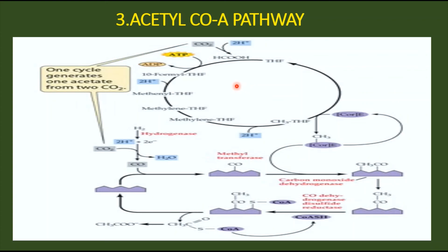So here, one molecule of carbon dioxide is involved in the reduction to carbon monoxide by CO dehydrogenase, and the other molecule is involved in forming the methyl-B12. These two combine to finally form acetyl-CoA. It's not a cyclic pathway — both two molecules of carbon dioxide are fixed and converted into acetyl-CoA, which in turn gives rise to pyruvate. This is all about the acetyl-CoA pathway of carbon dioxide fixation.